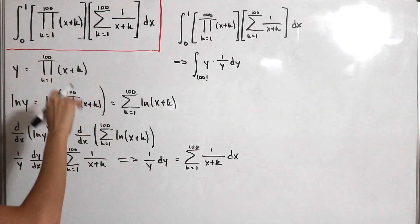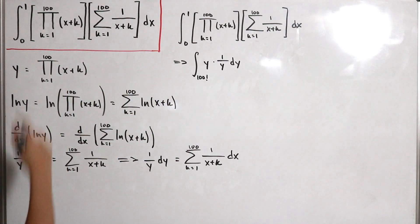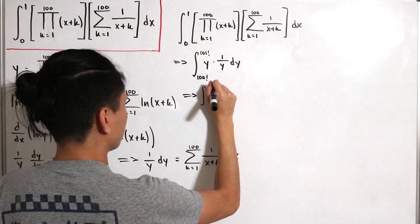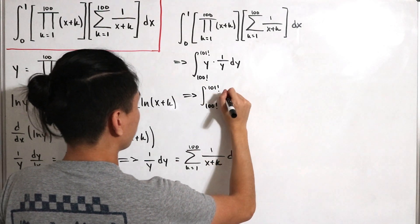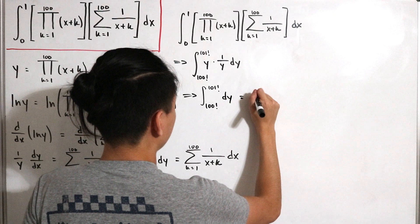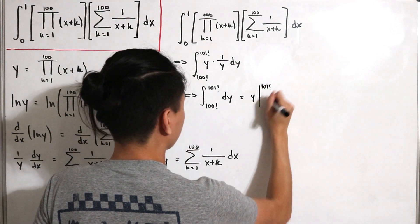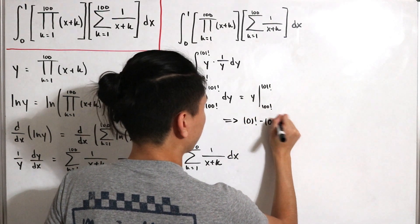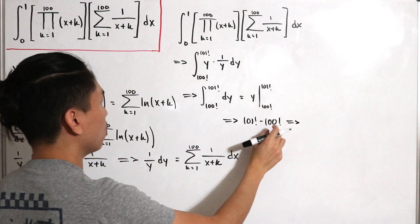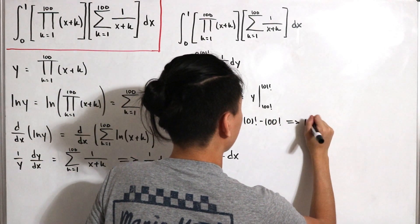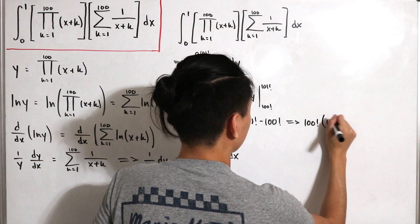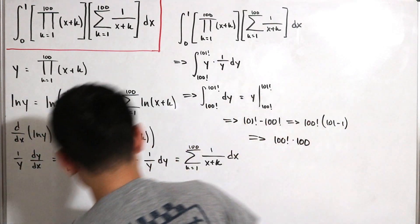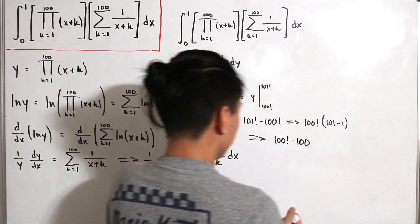Performing the necessary calculations, we get the integral from 100 factorial to 101 factorial of dy, which is just y evaluated from 100 factorial to 101 factorial. This is 101 factorial minus 100 factorial. We can simplify this further by factoring out 100 factorial, which becomes 100 factorial multiplied by (101 minus 1). Therefore, the final answer is 100 factorial multiplied by 100.